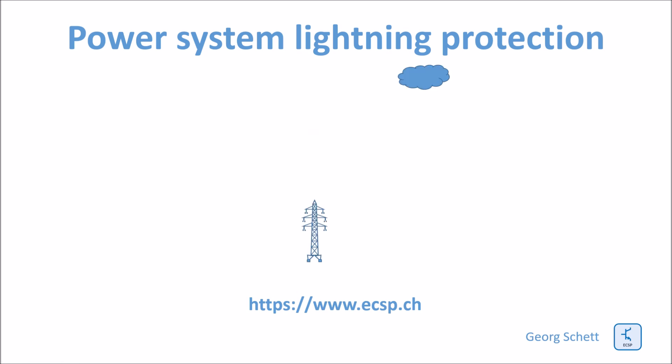We have our cloud up there, and normally this cloud is charged against the earth. There is a high field stress between the cloud and the earth's surface. This field stress leads to the inception of a leader, which then stepwise travels towards the surface of the earth in a branched manner, approaching the tip of the transmission tower.